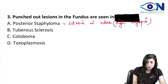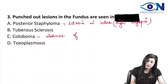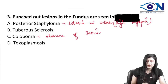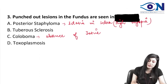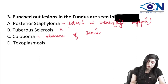Coloboma means there is an absence of tissue, so absence of tissue is also not a punched out lesion. Then we have tuberous sclerosis — again, we are not getting any punched out lesion there. It is a neurocutaneous syndrome, also called a phacomatosis.